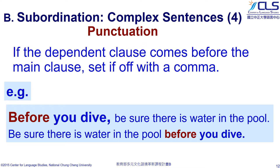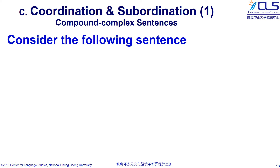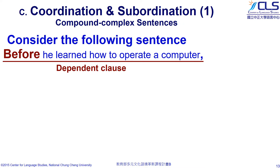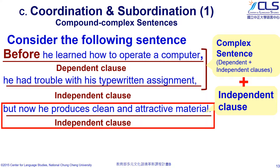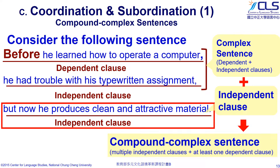If the dependent clause goes in front of the main clause, we need to set it off with a comma. Let's see the example below. So, what is a compound-complex sentence? Consider the following sentence. 'Before he learned how to operate a computer' is a dependent clause with the subordinating conjunction 'before.' 'He had trouble with his typewritten assignment' and 'now he produces clean and attractive material' are independent clauses with subjects and verbs. Here, we have one dependent clause and two independent ones, and this is a compound-complex sentence.